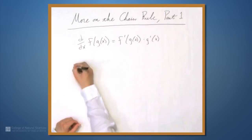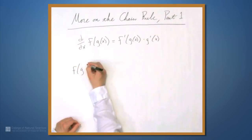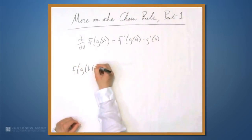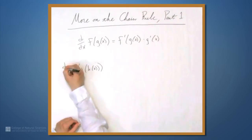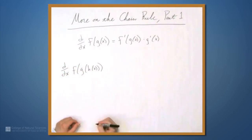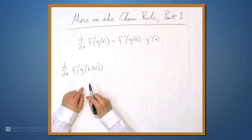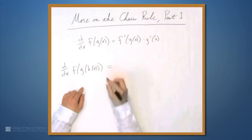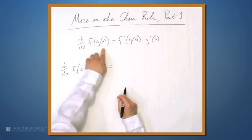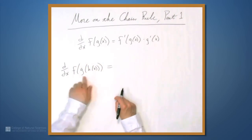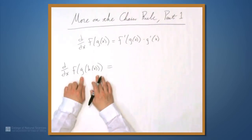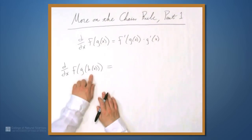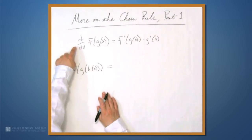What if we have f of g of h of x? How do we find the derivative of this thing? Well, we'll use the chain rule again. We're applying f to some function inside, and the only difference is that here, that function inside is itself a composition of functions. So we'll need to use the chain rule twice.